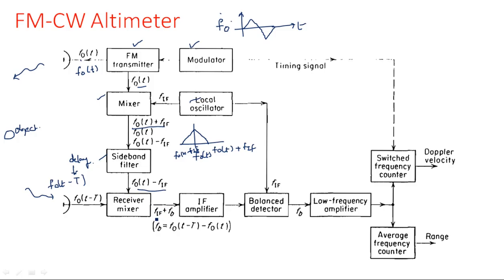The output is FIF + FB. FB is the beat frequency. Since the signal contains an intermediate frequency component, it is amplified by the IF amplifier and given to the balance detector. The balance detector eliminates the intermediate frequency FIF that was added in the transmitting section — we only added FIF to eliminate flicker noise. So FIF is detected here; from FB + FIF, the FIF is eliminated, leaving only FB.